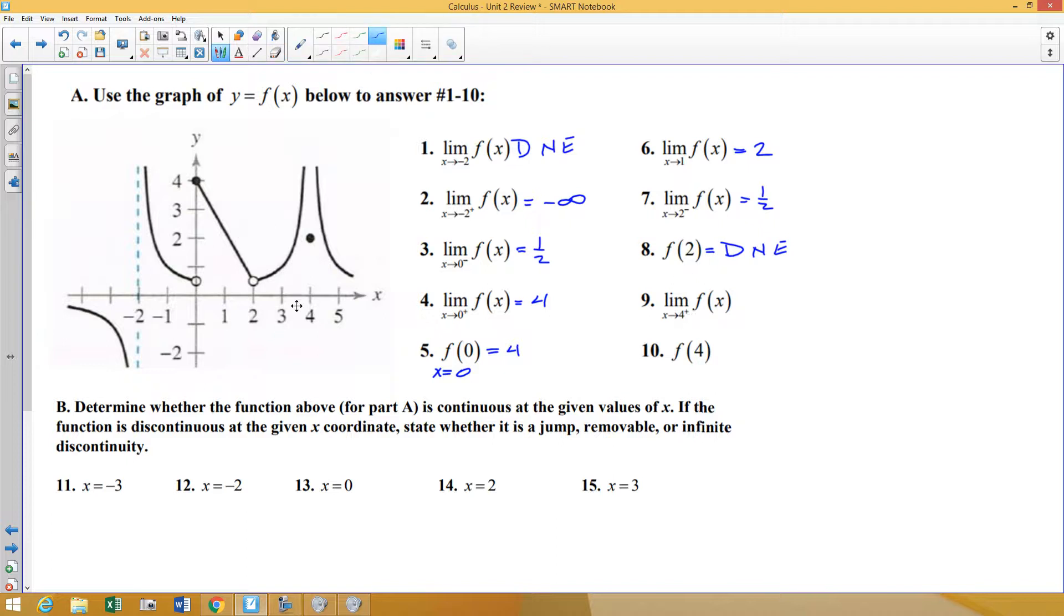4 from the right, so here's 4. The right side of 4 is going up towards infinity. And f of 4 means where is the point when x equals 4. That is a vertical asymptote, but at 4, there is a point defined at 2. And so there are your first 10 questions.